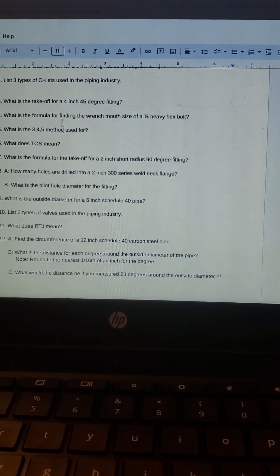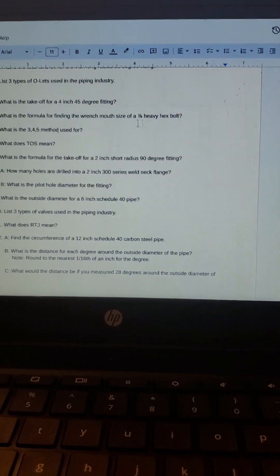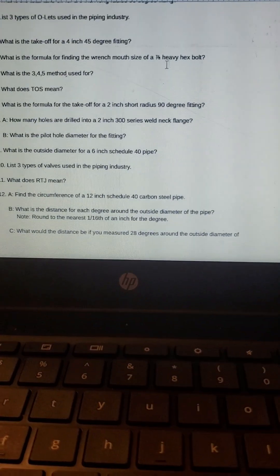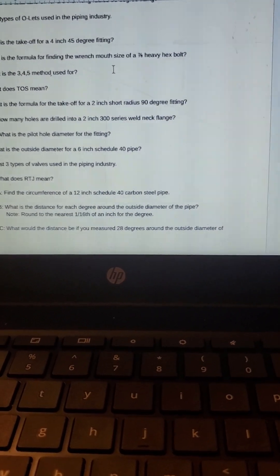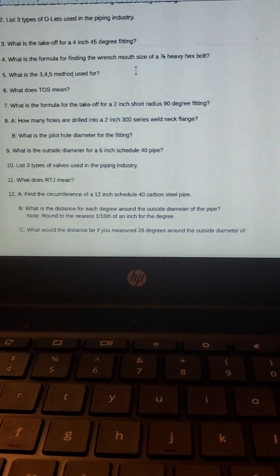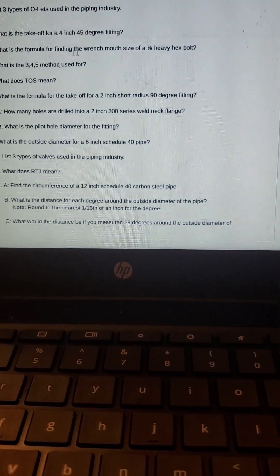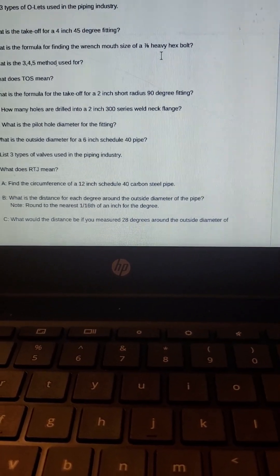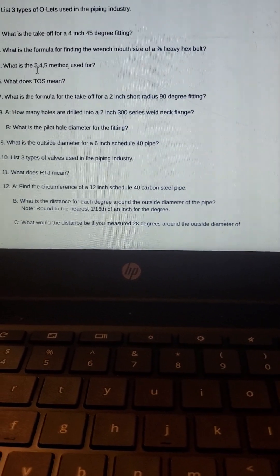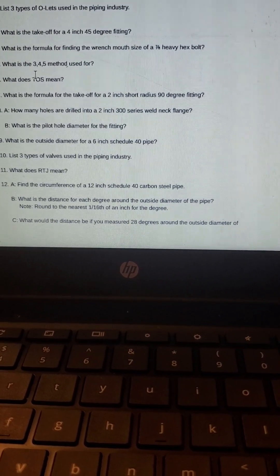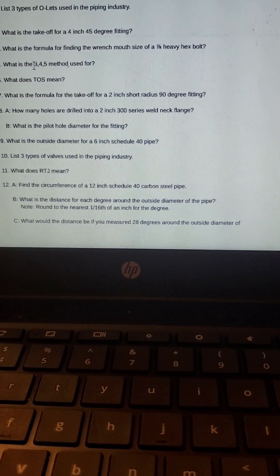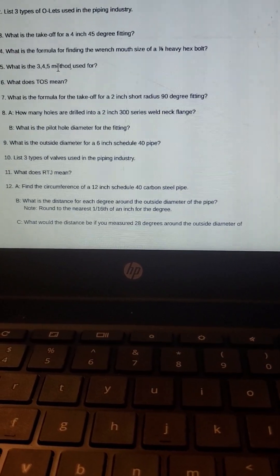What is the formula for finding the wrench mouth size of a 7/8 hex heavy hex bolt? It's 1.5 plus an eighth, so in this case it'd be one and seven sixteenths. What is the 3-4-5 method used for? Basically it's just making sure that two pieces of steel or two pieces of pipe are squared to one another.